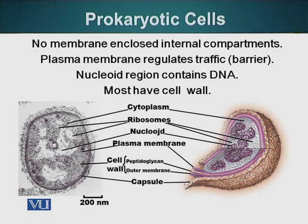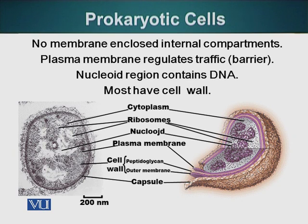The important feature of prokaryotic cells is that they do not have membrane-enclosed organelles. We will contrast this when we talk about eukaryotic cells. Bacterial cells, for example, do not have membrane-enclosed organelles, and they don't even have a nucleus. Their DNA is present in a specific region called the nucleoid region. The genetic material is surrounded by cytoplasm which contains particular matter — for example, ribosomes suspended in the cytoplasm. These cells also have a plasma membrane, which is a selective barrier allowing the cell to import certain things and export waste material.